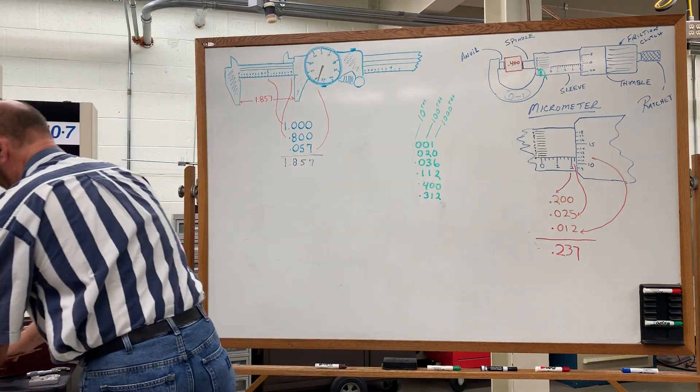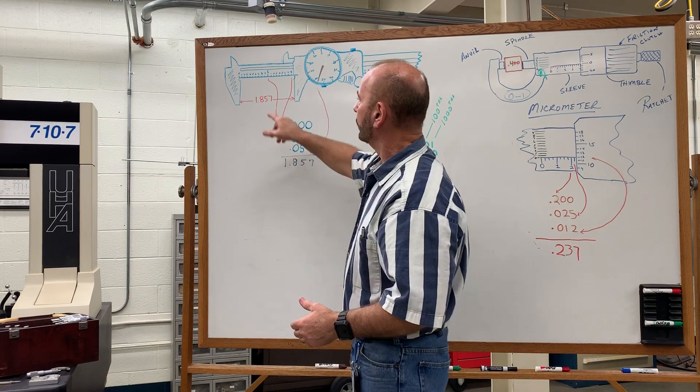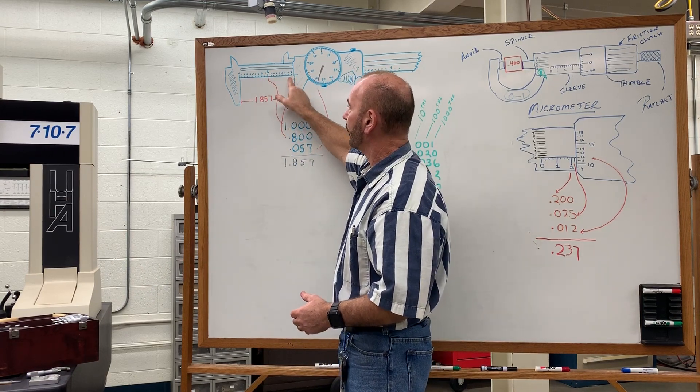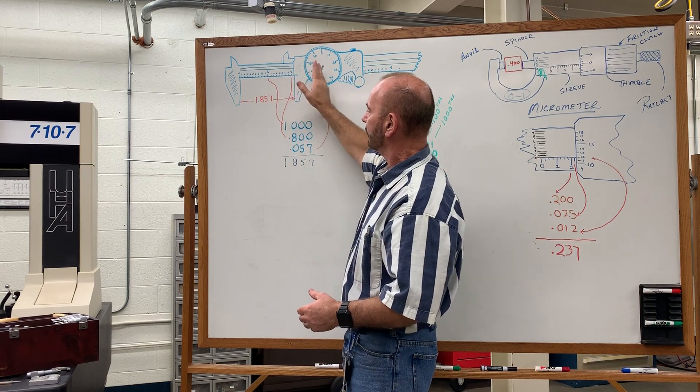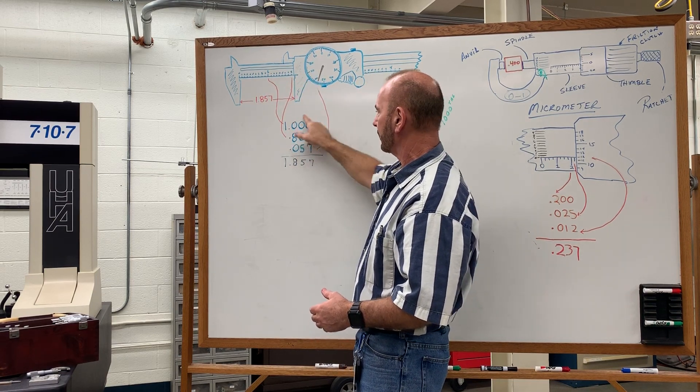Reading the caliper is very, very simple. It's just like reading the micrometer. You have how many inches are showing. In this example here, I have one inch showing. I don't see the two inch mark so I write my one inch, bring my zeros out.